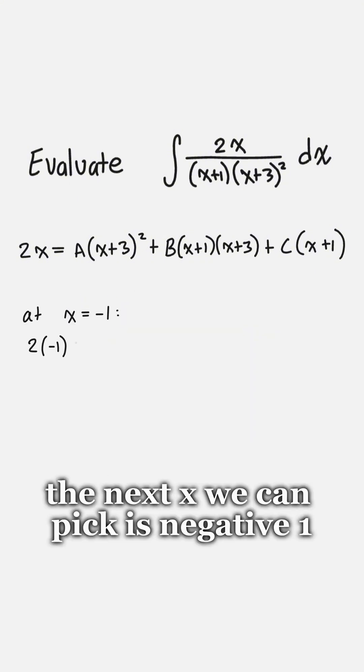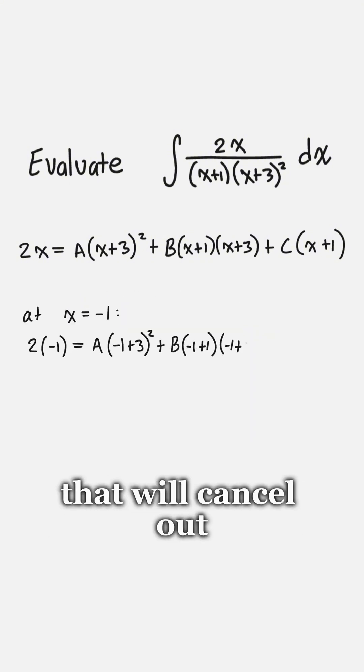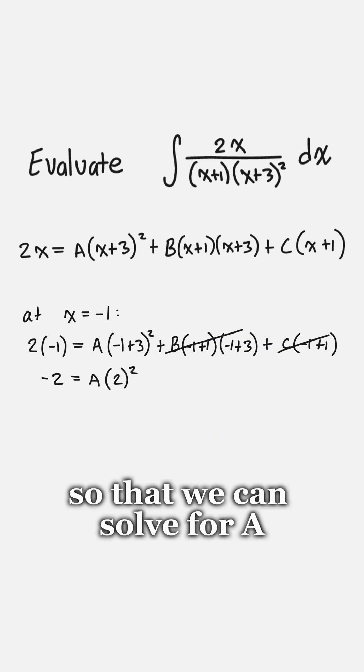The next x we can pick is negative 1. That will cancel out the b and c terms so that we can solve for a.